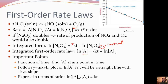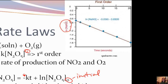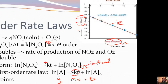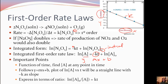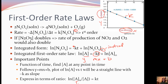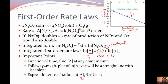Some important points to remember: because it's a function of time, we can find the concentration of A at any point in time. The rate law follows the equation for a straight line, y = mx + b. Our y is the natural log of the concentration, our x is time, and our m value — the slope — is negative k. We can also express this as a ratio: ln([A]₀/[A]) = kt.